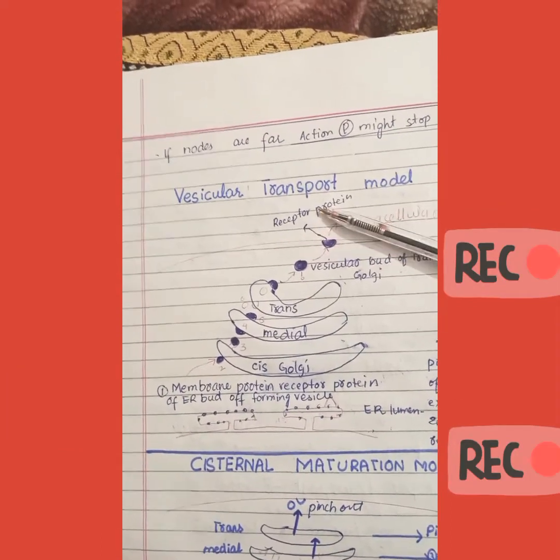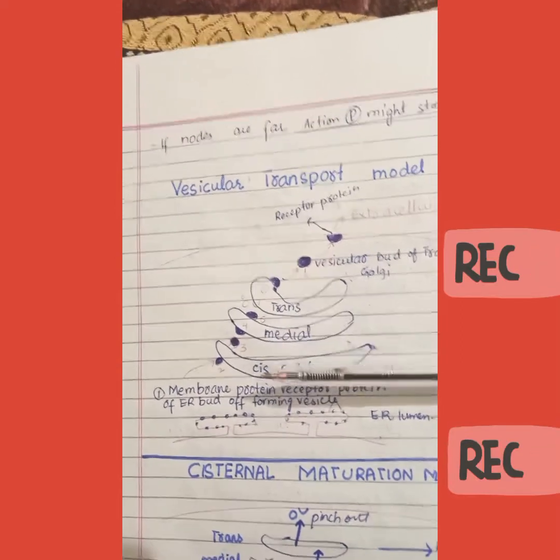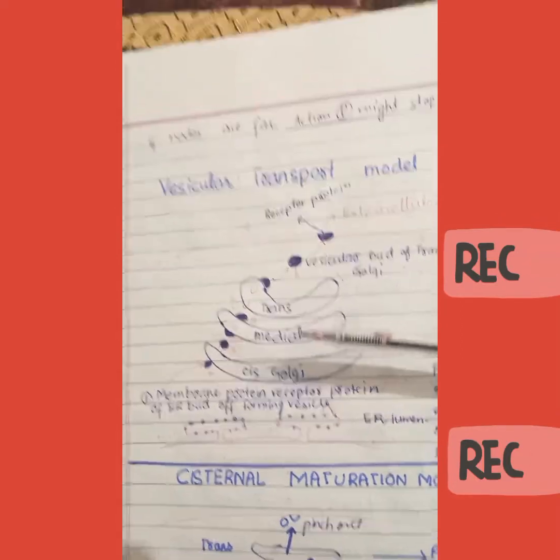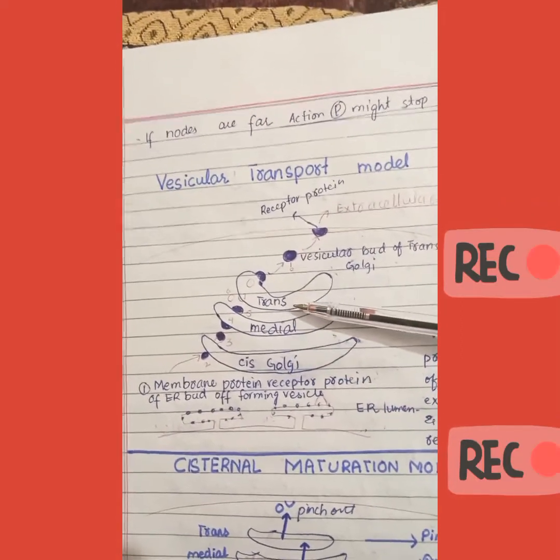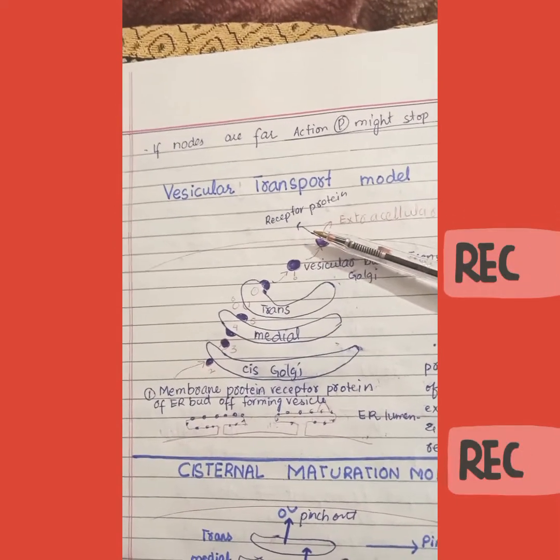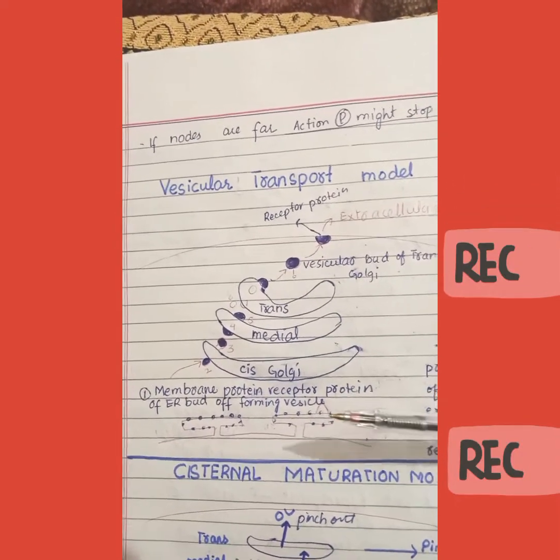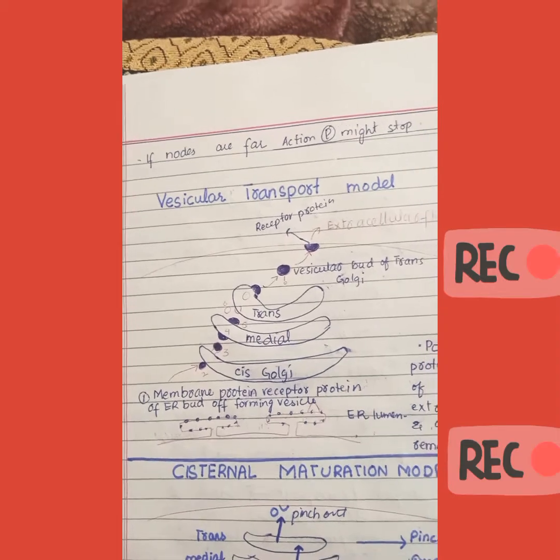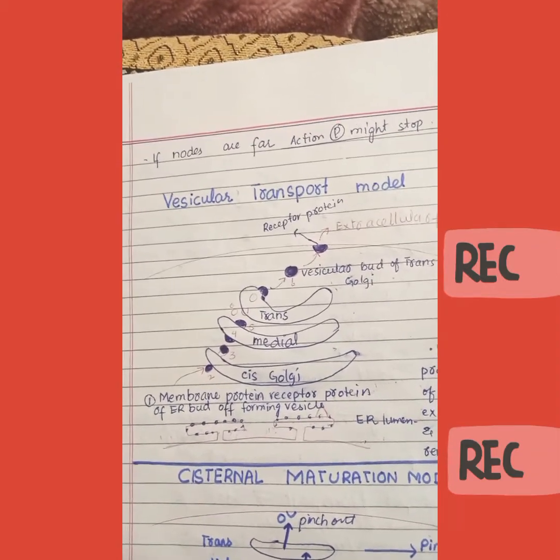This is about the vesicular transport model. This is our Golgi apparatus: this is the cis part, this is the medial part, this is the trans part. This is our plasma membrane and this is our endoplasmic reticulum.